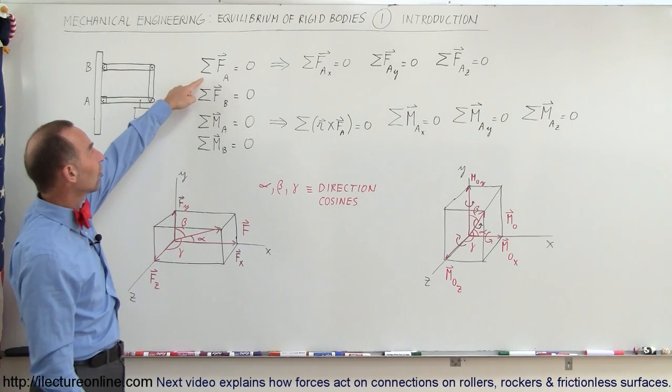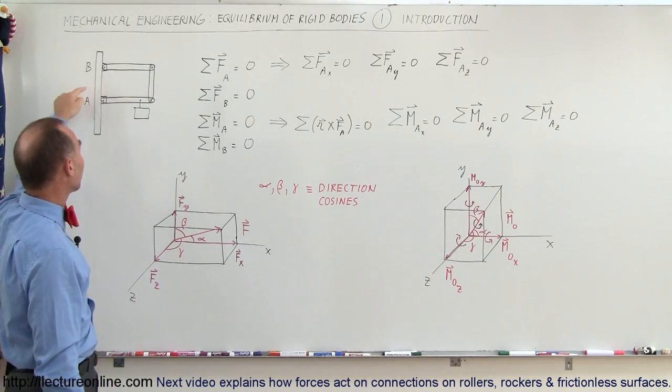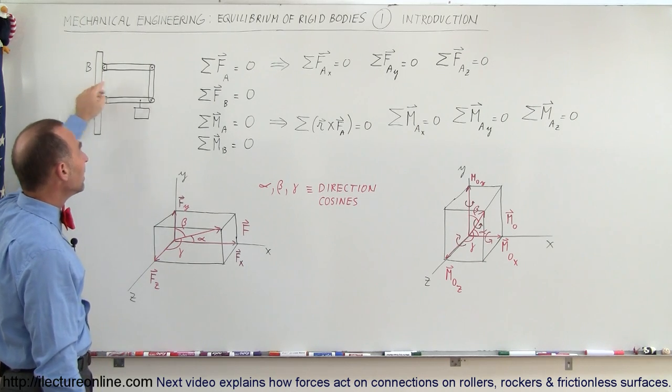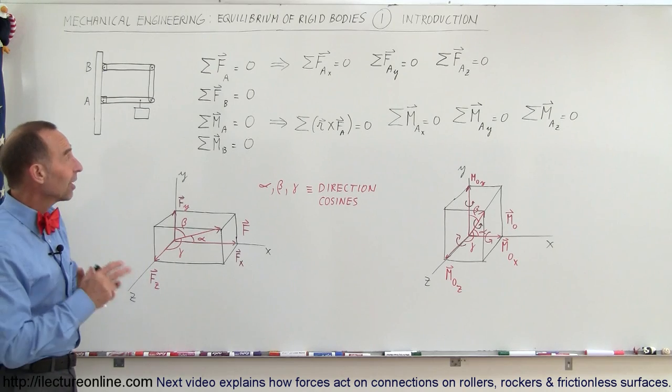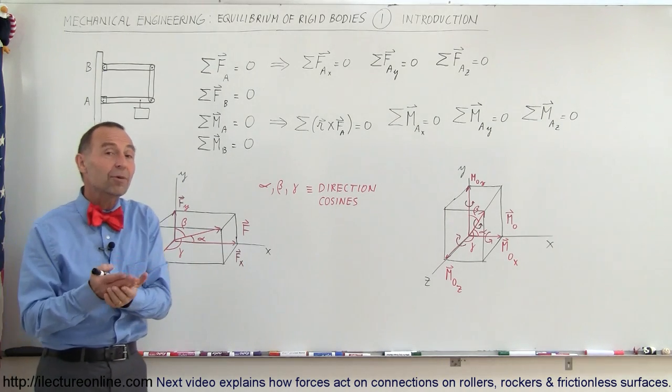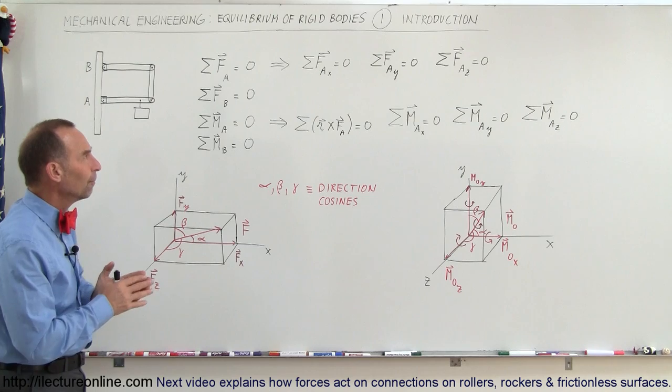We can then say that the sum of all the forces acting at any point, for example point A or point B, those must add up to zero. All the forces acting at point B must add up to zero. All the moments at A must add up to zero. All the moments at B must add up to zero.